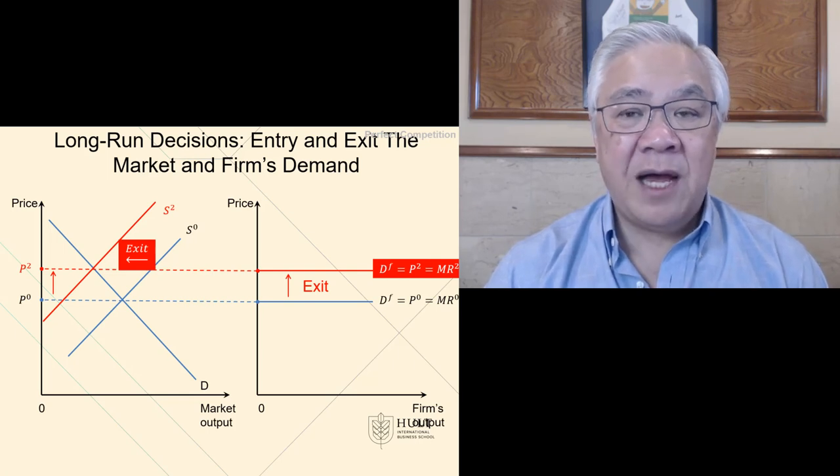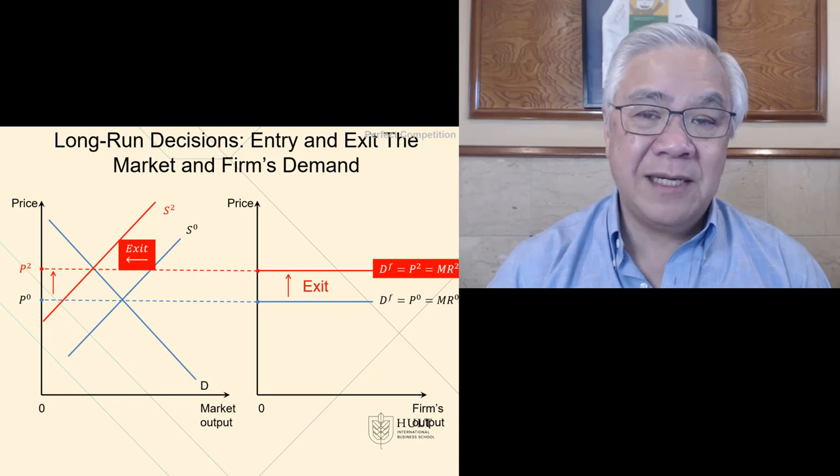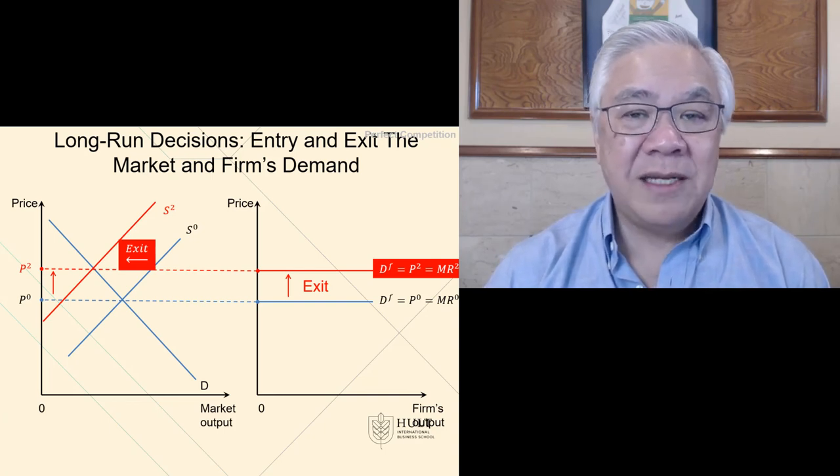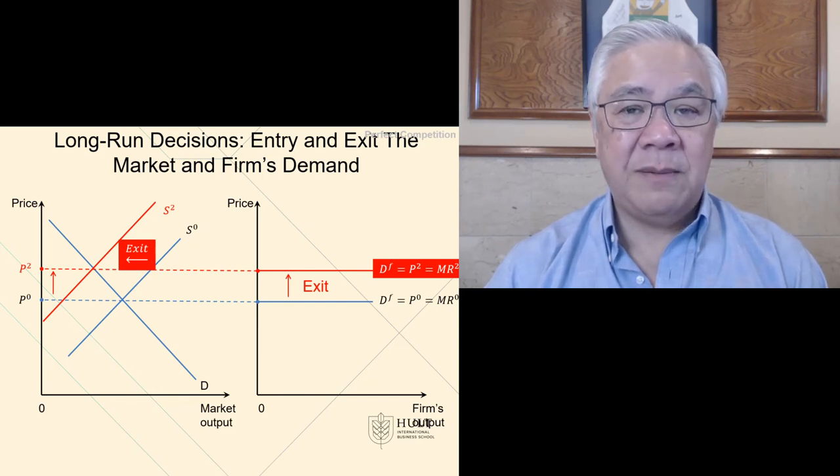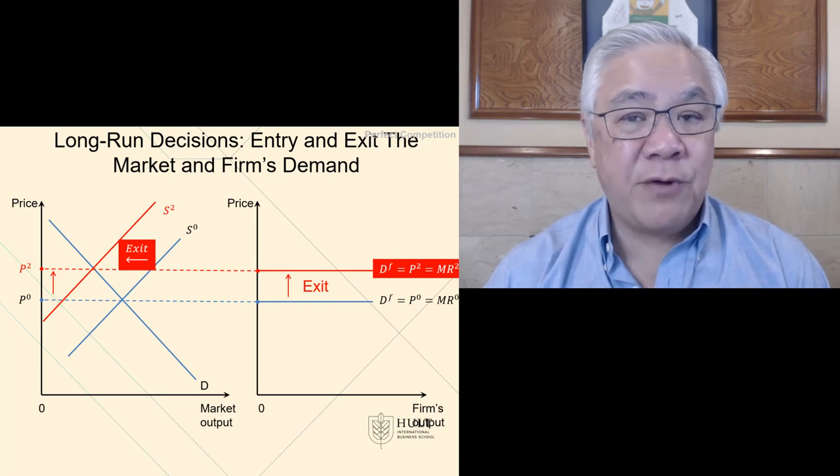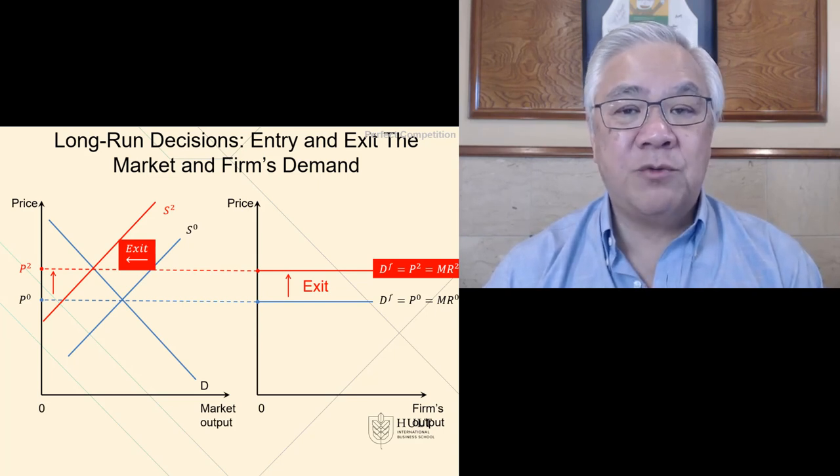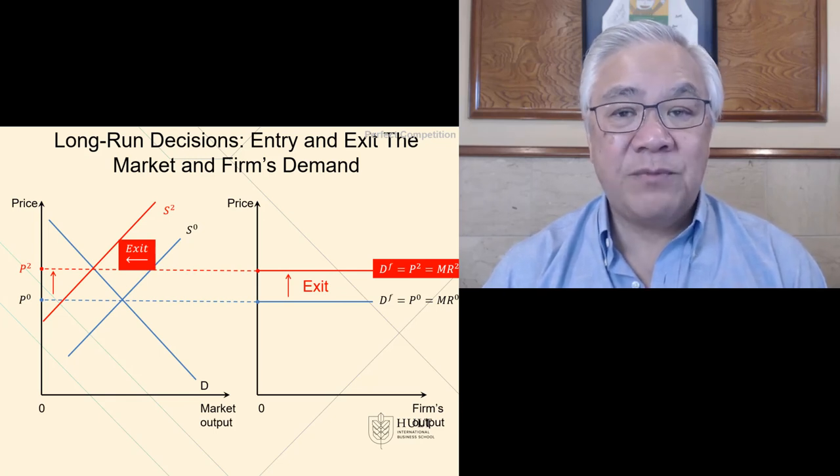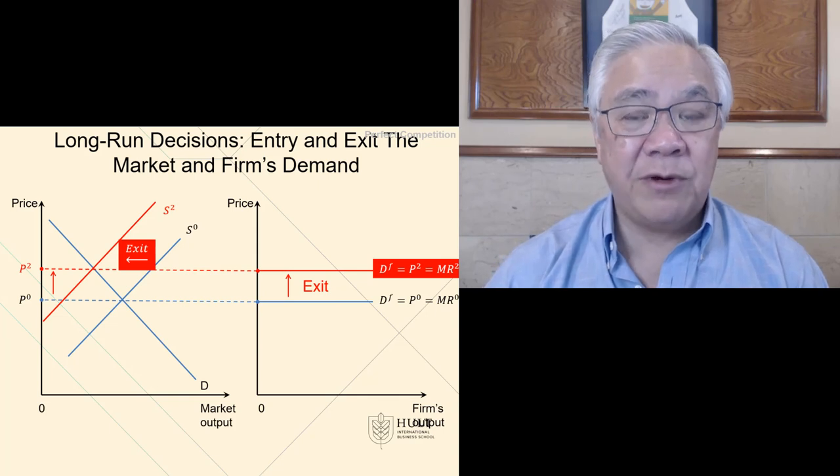If you exit, then supply in the industry will then drop, thereby increasing the price and reducing the quantity. So the market is finding its equilibrium. This is another example of the invisible hand where if there's too much profit in the industry, competition will enter. If the prices are driven down to the point where there are losses, then there will be exits and the price will rise until we get to market equilibrium.